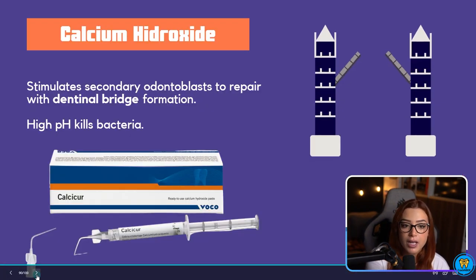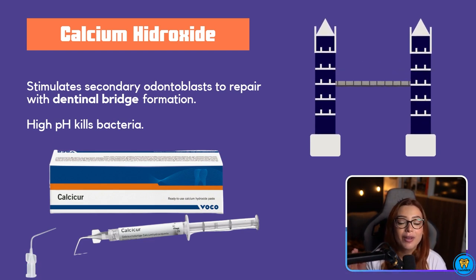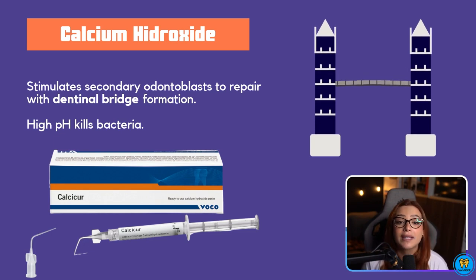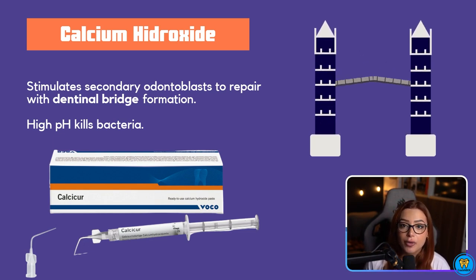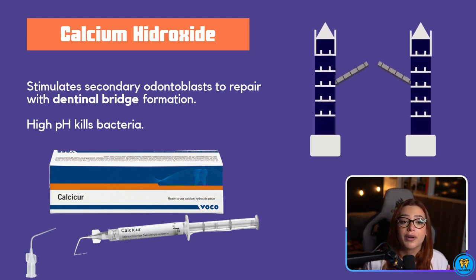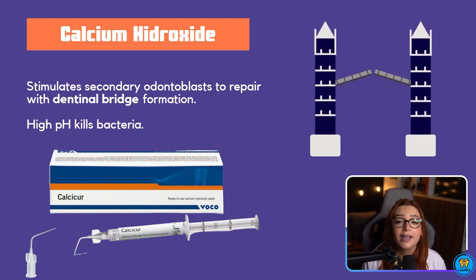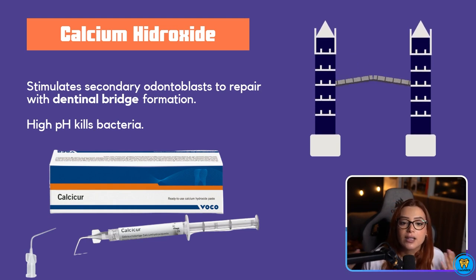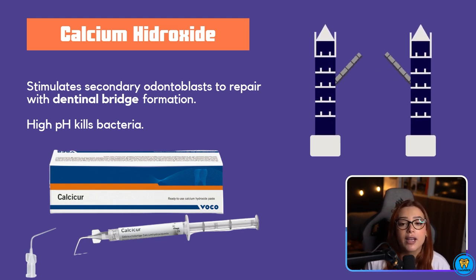First of all, we have calcium hydroxide. This is one of my favorite images because you'll always remember this. This one stimulates the secondary odontoblasts to repair with dentinal bridge formation — that's why I put a bridge in there, so you can remember: every time you hear calcium hydroxide, you'll remember dentinal bridge. This basically means that the calcium hydroxide stimulates the odontoblasts to produce more dentin.